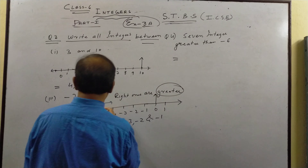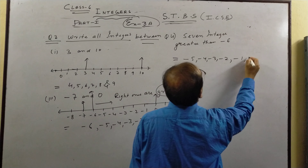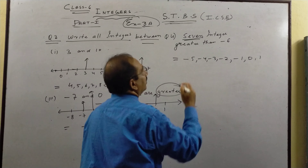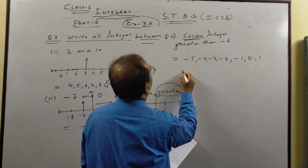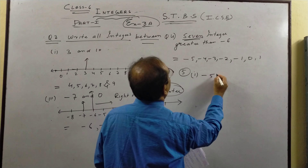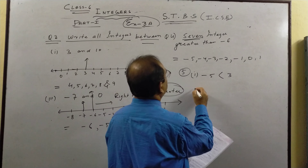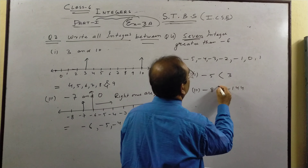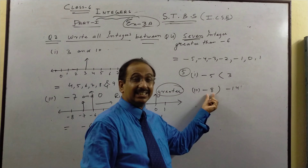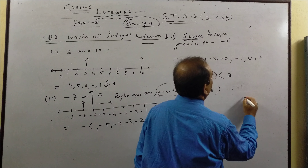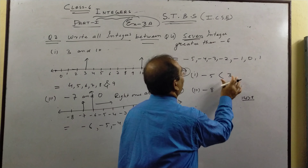Question 4: write 7 integers greater than minus 6. Greater than minus 6 means to the right of minus 6 on the number line. So we take minus 5, minus 4, minus 3, minus 2, minus 1, 0, and 1 — that gives us 7 integers greater than minus 6.